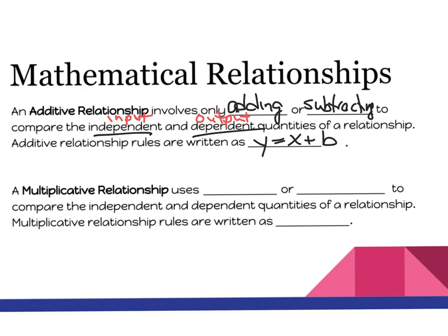The second type is a multiplicative relationship, which uses multiplication or division to compare the independent (input) and dependent (output) quantities of a relationship. Multiplicative relationship rules are written as y equals ax. When you have two variables or two letters next to each other, that means they are multiplying.